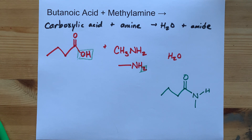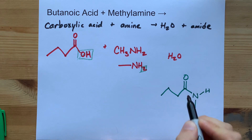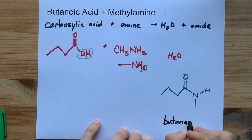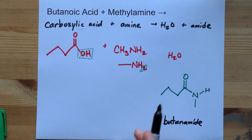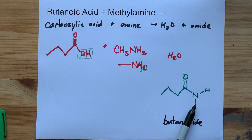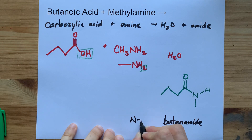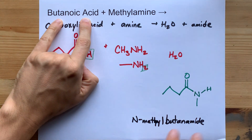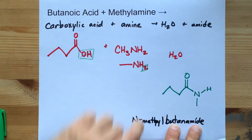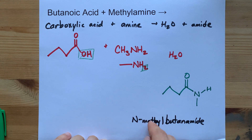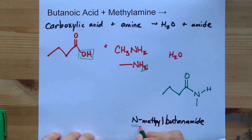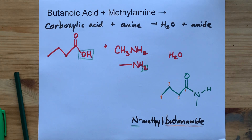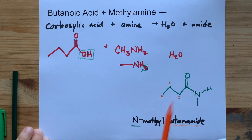Naming this is trickier. The carbon chain that has the double bonded O gets the root of the name. It's still 4 carbons long, so we call it butanamide. Then you name all your substituents — the only substituent here is a methyl group on the N, so we call that N-methyl, giving us N-methylbutanamide. The butanoic acid became the butanamide root, and the things connected to the amine are prefaced with an N to show where they're attached. The 1, 2, 3, 4 numbering corresponds to the root, and that methyl group is connected to the N of the amide.